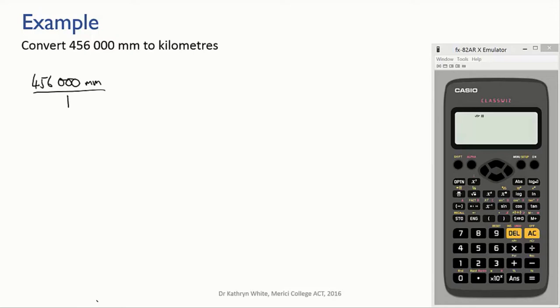First, let's convert the millimeters into meters. I know there are 1,000 millimeters in a meter and I want to cancel out the millimeters, so I'm going to put the conversion factor this way around with the millimeters on the bottom. Then the millimeters cancel and I'm left with units in meters.